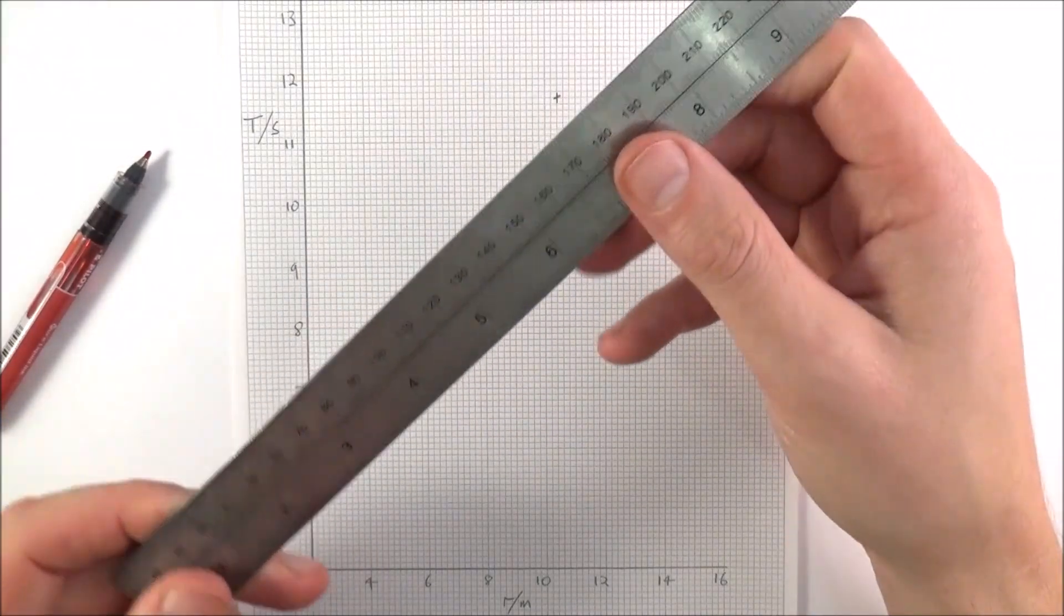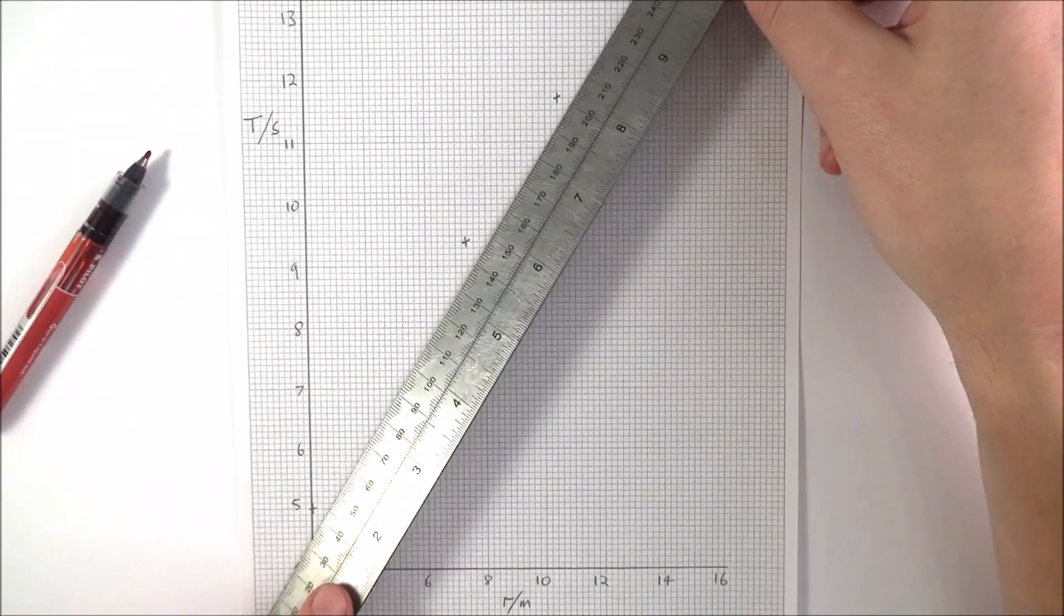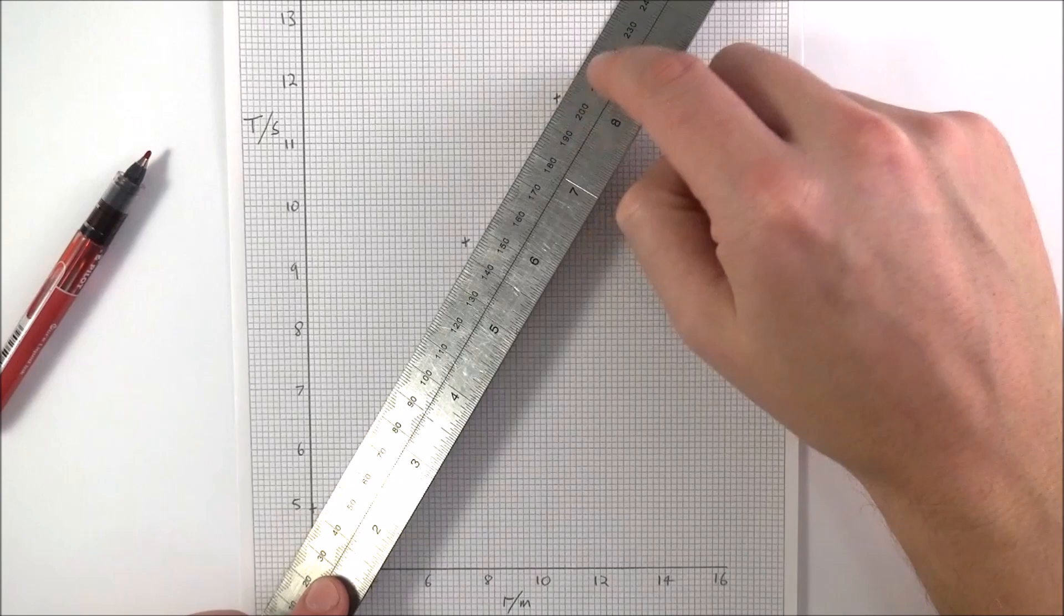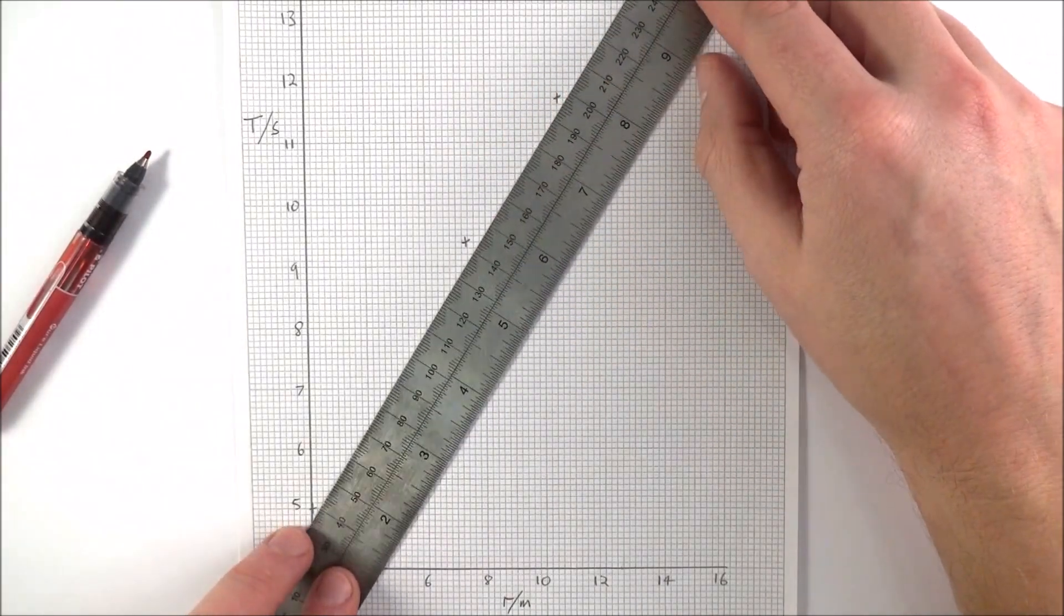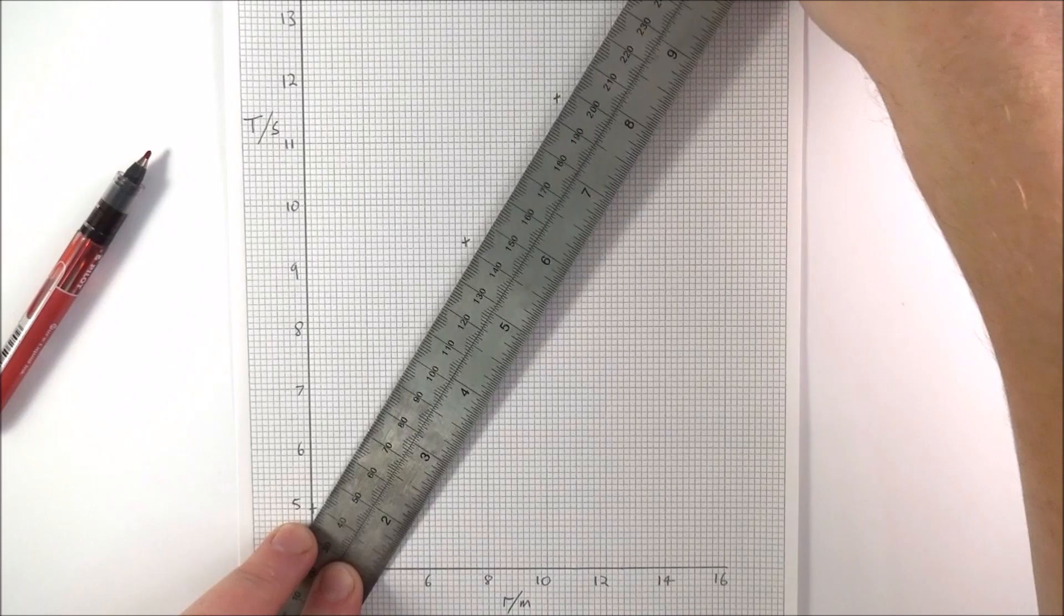Now when it comes to drawing in your line of best fit, if you have a solid ruler it's not very easy to see the points which lie above and below the line. So something which is better is to use a clear ruler.